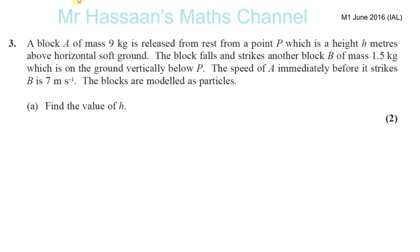The block falls and strikes another block B of mass 1.5 kg which is on the ground vertically below P. The speed of A immediately before it strikes B is 7 meters per second. The blocks are modeled as particles. Find the value of H. So here we have a classic kind of SUVAT question here.